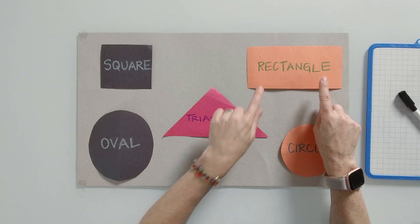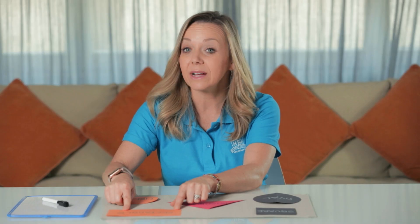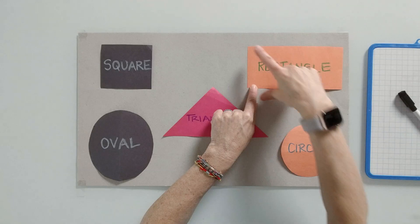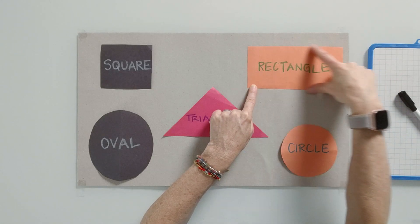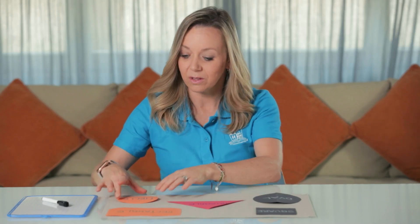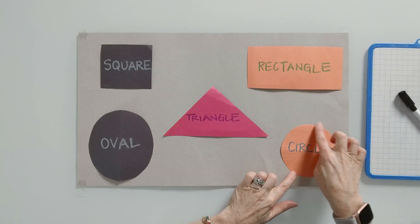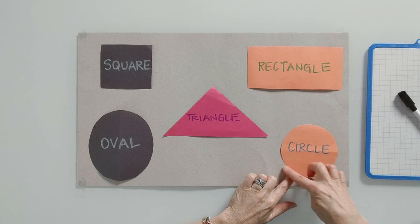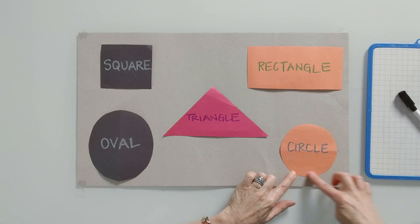Now we have a rectangle. A rectangle has four sides, but they are not all equal — two of them are the same and the other two are the same. Next, we have a circle. Now you all know a circle — it's round and equal all the way around.